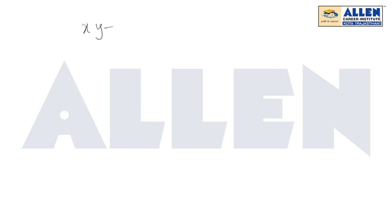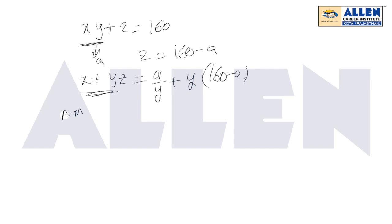We want xy plus z equals 160. Let xy be some a, so z equals 160 minus a. Now proceed with the given value x plus yz. We want the minimum of this. For x, taking xy equals a, so x equals a/y plus y times (160 minus a). We will use AM greater than or equal to GM method here to find the minimum value of this.